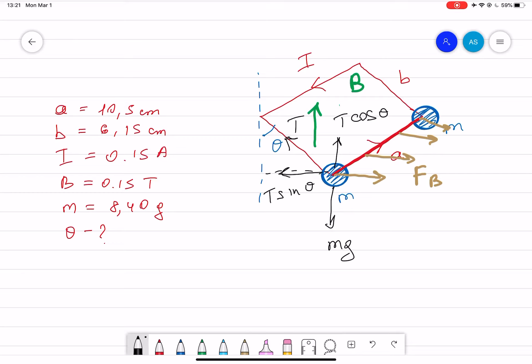Now, the FB is equal to the current multiplied by that length which in our case is length A, times magnetic field B. Now we have all the equations.